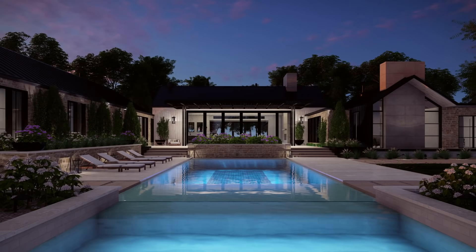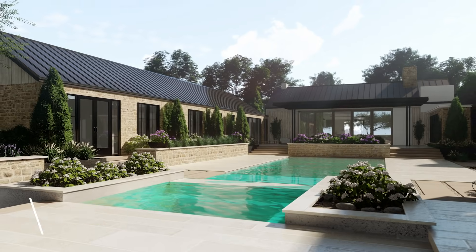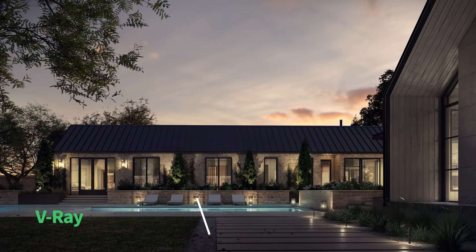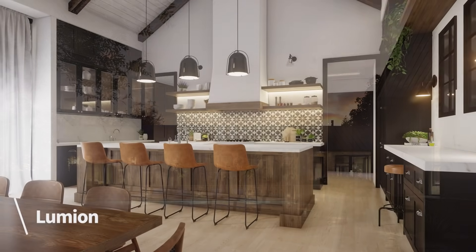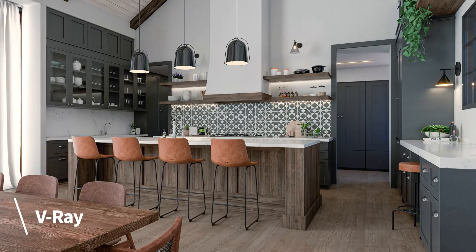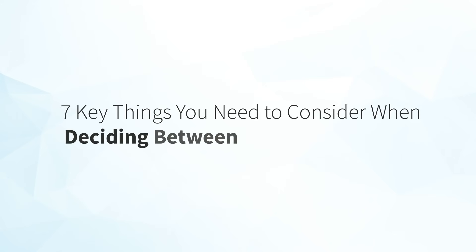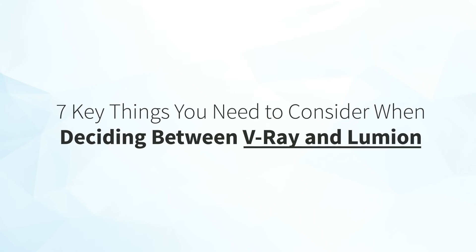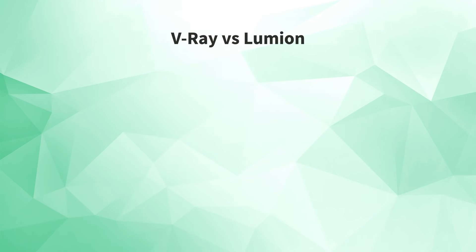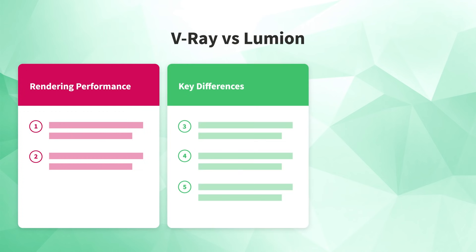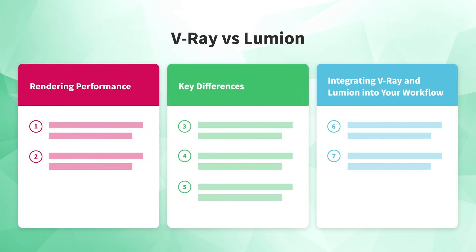V-Ray or Lumion — they can both help you create stunning renderings, but their features and how you integrate them into your SketchUp workflow are vastly different, which is why it's so hard to compare them head to head. The important thing is not trying to figure out which one is the best, but rather which one is the best for you. I've come up with a list of seven key things to consider, split into three categories: rendering performance, key differences, and integrating V-Ray and Lumion into your workflow.